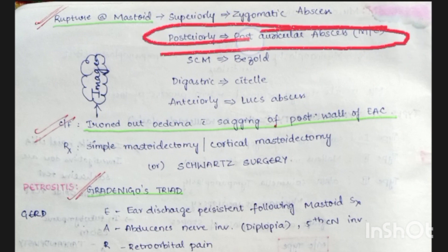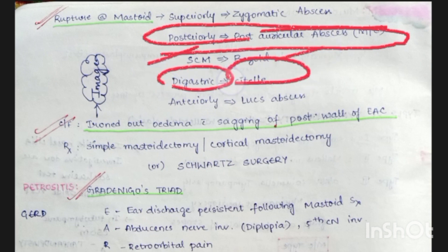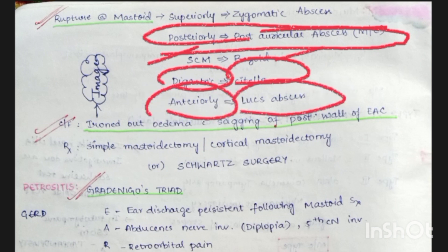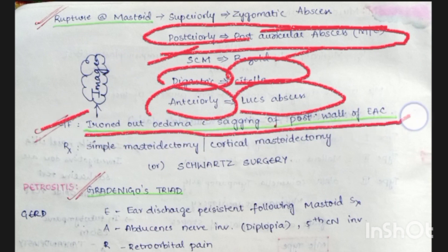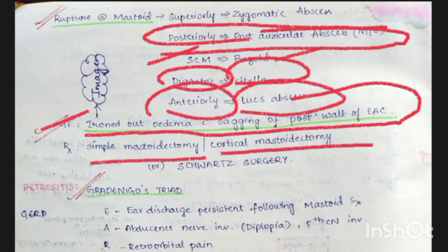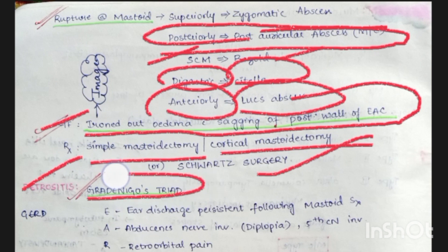Rupture into the sternocleidomastoid is Bezold's abscess; rupture into the digastric muscle is Citelli's abscess; rupture anteriorly is Luc's abscess. Clinical features include ironed-out edema with sagging of the posterior wall of the external auditory canal. Treatment is simple (cortical) mastoidectomy, also known as Schwartze surgery.